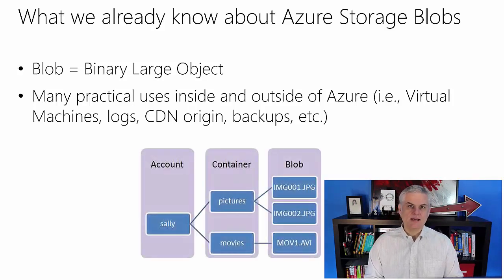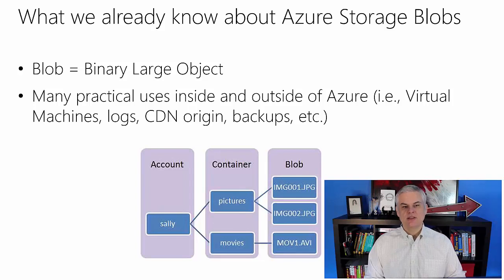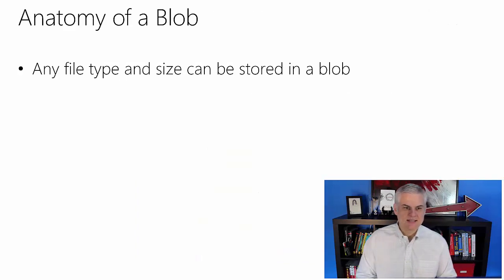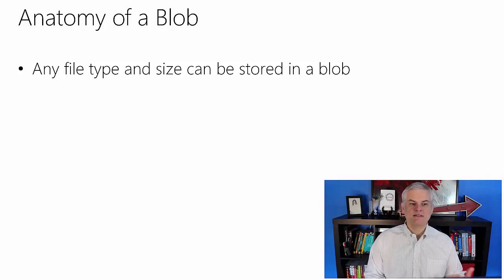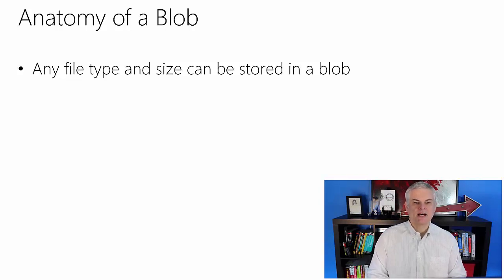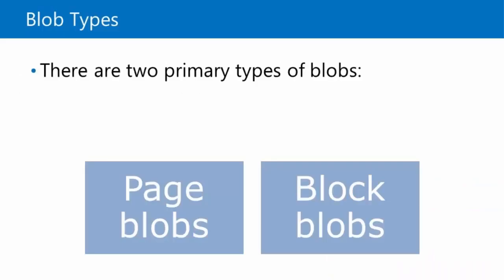The taxonomy is pretty easy to understand. You have the storage account itself. An account can have multiple containers and inside of each container you can have multiple blobs. A blob can be of any file type and just about any file size. There is a maximum amount, but I doubt that we'll ever reach it, that can actually be stored in a blob container.